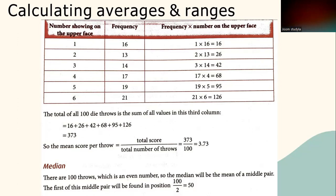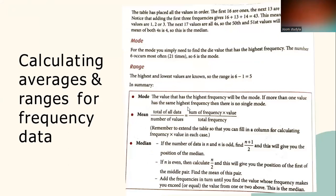There are 100 throws, which is an even number, so the median is the mean of the middle pair. The first of the middle pair is at position 100/2 = 50. The table has placed all values in order: the first 16 are 1s, the next 13 are 2s, and so on. Adding the first three frequencies gives 16+13+43=43 — wait, that means the first 43 values are 1, 2, or 3, and the next group of values are 4. So the 50th and 51st values are both 4, and the mean of both 4s is 4 — this is the median. For the mode, find the die value with the highest frequency: the number 6 occurs 21 times, so 6 is the mode.